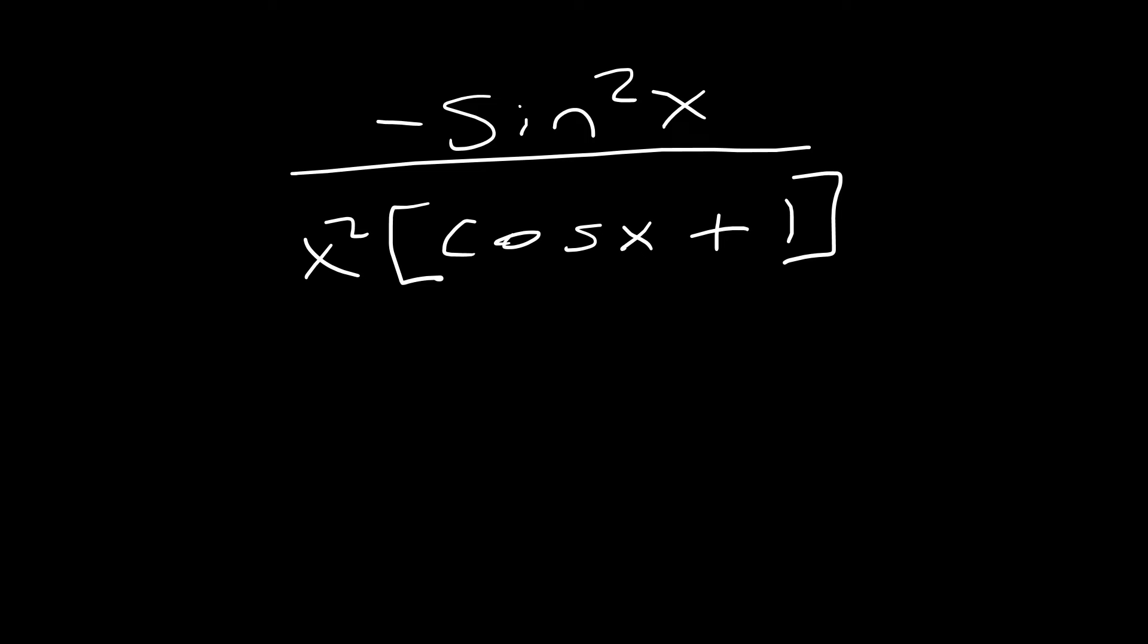Now we can separate this. Notice that, first of all, this is a 2 and this is a 2. So you want to likely separate in that fashion. We're going to have negative sine squared x over x squared times 1 over cosine x plus 1. That's allowed.